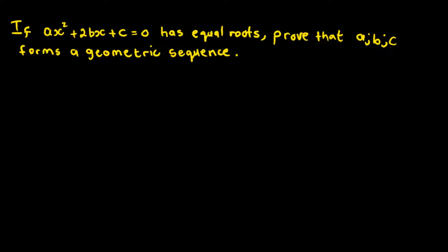We are given the question: if ax² + 2bx + c = 0 has equal roots, prove that a, b, c forms a geometric sequence.